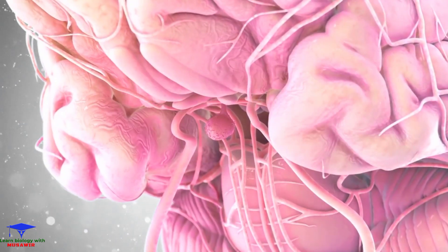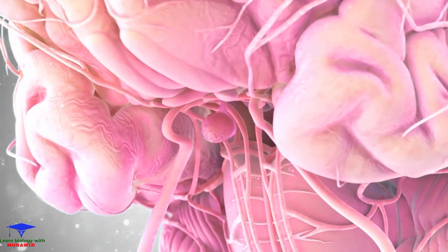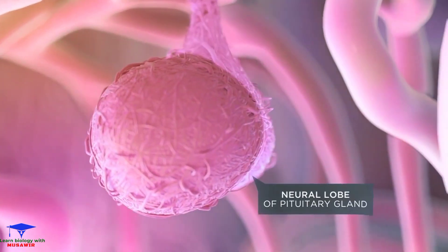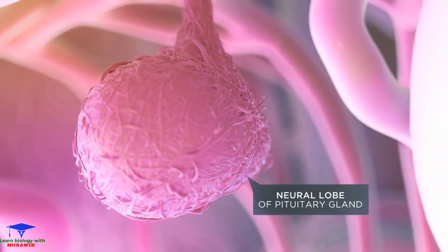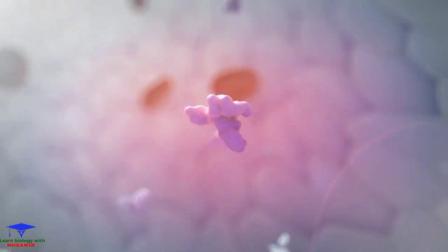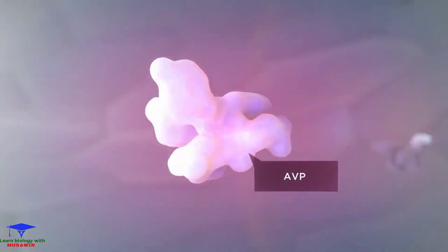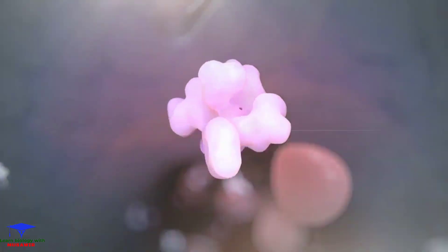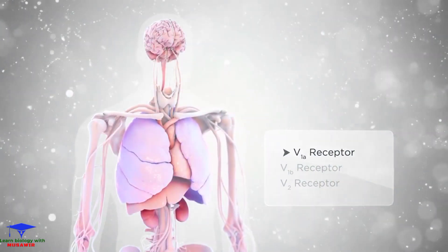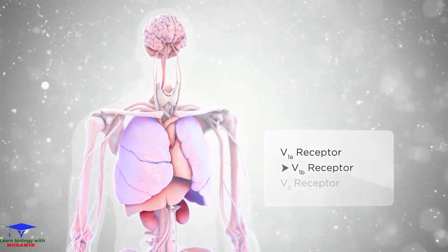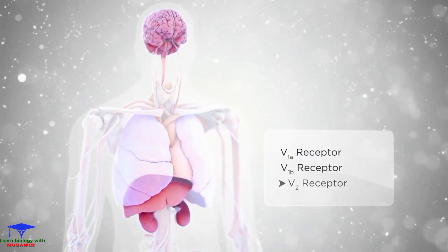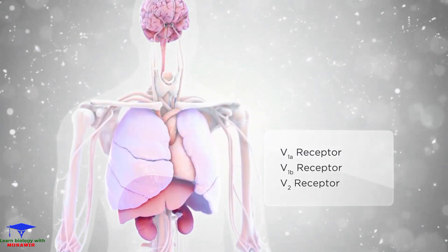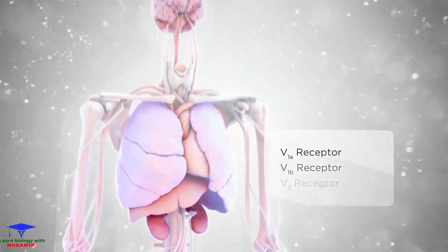AVP is produced in the hypothalamus and released into circulation from the neural lobe of the pituitary. Once in circulation, AVP binds to a number of receptor subtypes, including the V1A, V1B, and V2 receptors distributed throughout various tissues in the body.